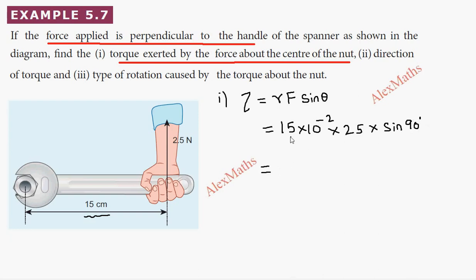Now, 15 times 25 times sin 90 degrees equals 15 times 2.5 times 10 power minus 2 newton meters.